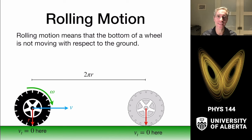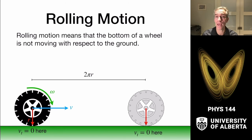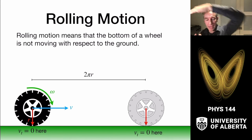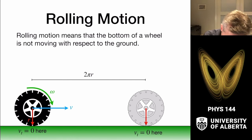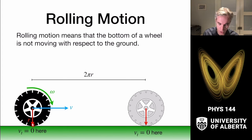We consider rolling motion: when an object rolls along in contact with the ground, the contact point has zero velocity with respect to the ground. Like a tire rolling along — it's not sliding against the surface; it comes down, touches, then lifts back up. There is a specific relationship between the angular velocity of a rolling object and the velocity of the center of mass, such that the tangential velocity at the contact point is zero.